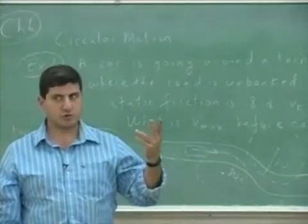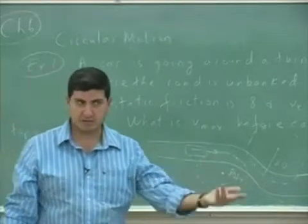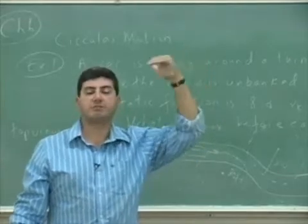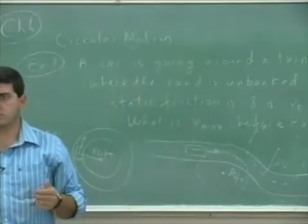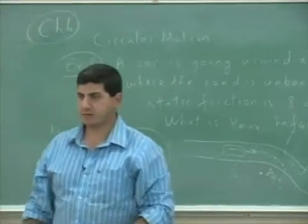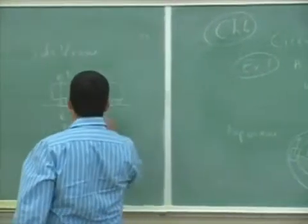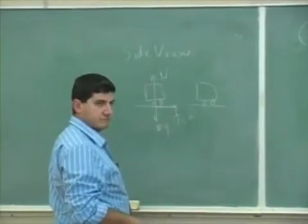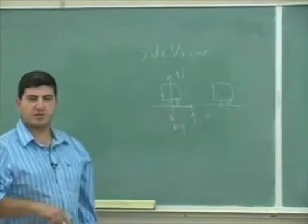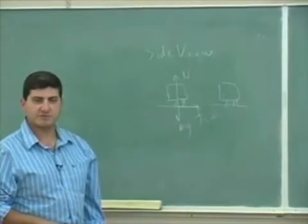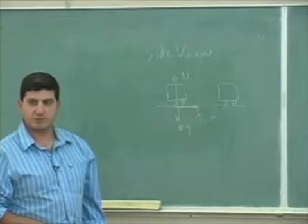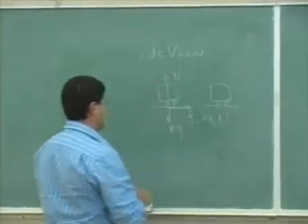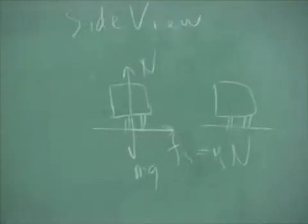But if the car begins to go faster now and wants to still make the turn, the F s is going to have to increase, increase, increase. What's the maximum that it can equal? What is the maximum F s can equal? Mu S n. Exactly. So the maximum that F s can equal is mu S n.